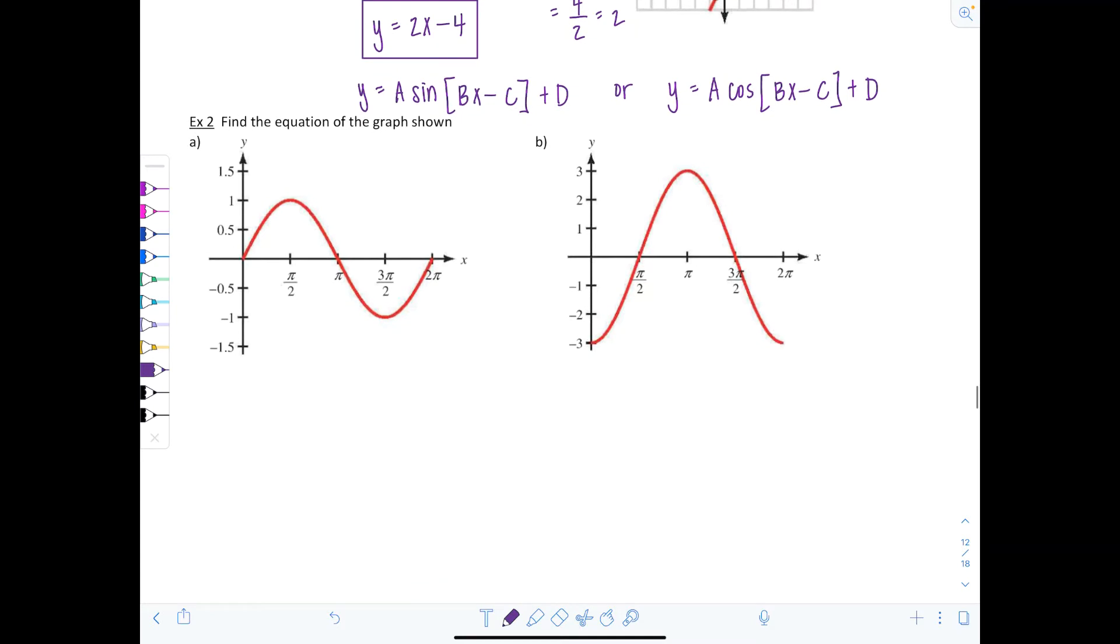Let's look here at the first example. Example 2A, find the equation of the graph shown. So since I noticed that at zero, the graph starts at zero, I'm going to choose sine. That's going to just be a little bit easier to work with.